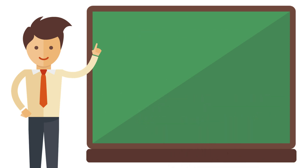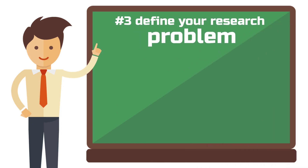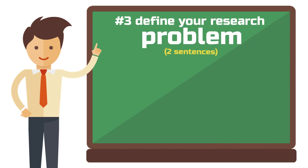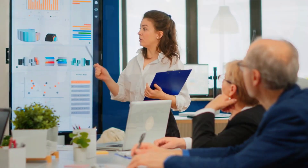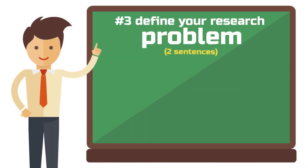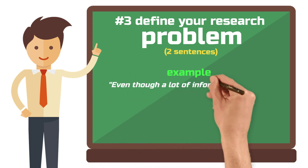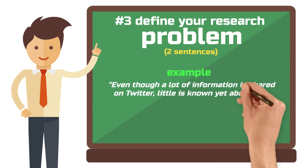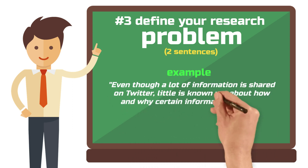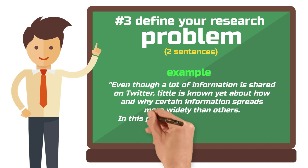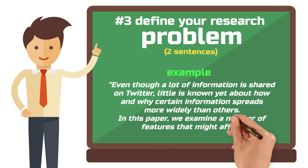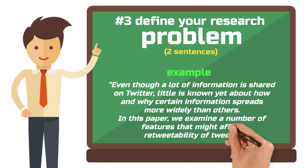Step 3: The problem definition — what is your research problem? Two sentences. The research problem is often grounded in the scientific debate: what do we already know, what do we not know, and why is that a problem? Why should we conduct research to address it? For the problem definition, you could write: 'Even though a lot of information is shared on Twitter, little is known yet about how and why certain information spreads more widely than others. In this paper, we examine a number of features that might affect retweetability of tweets.'